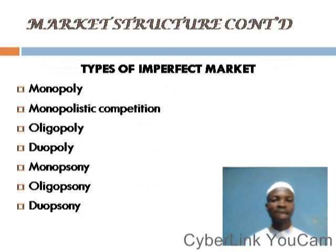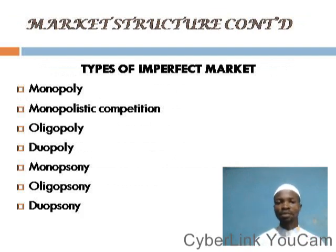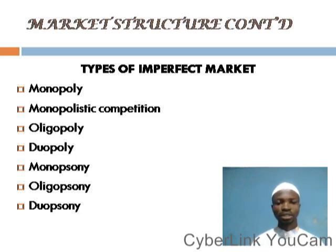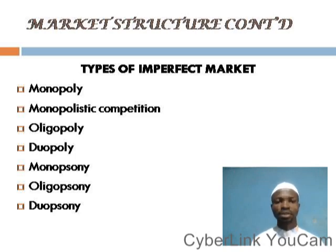Next, let's look at the types of imperfect market. We have different forms of market under imperfect market. We have monopoly, monopolistic competition, oligopoly, duopoly, monopsony, oligopsony, duopsony, and so on. But for the purpose of our class, we shall limit ourselves to monopoly as well as monopolistic competition, though I will try to give you the meanings of the other forms of market which we are not going to discuss in detail.